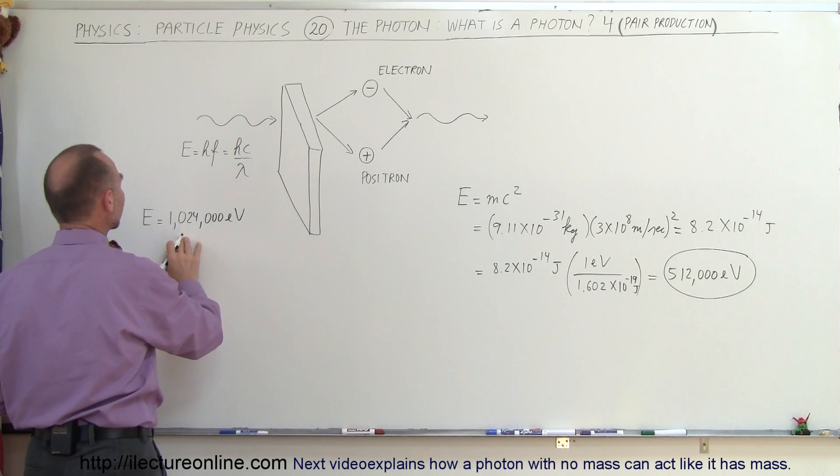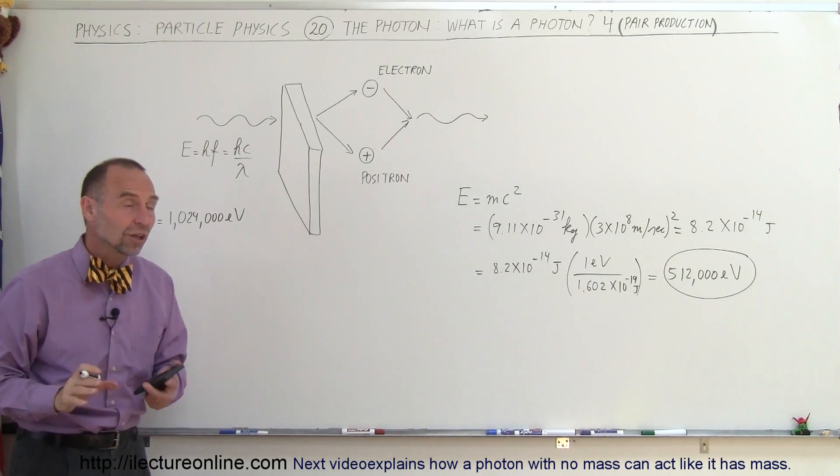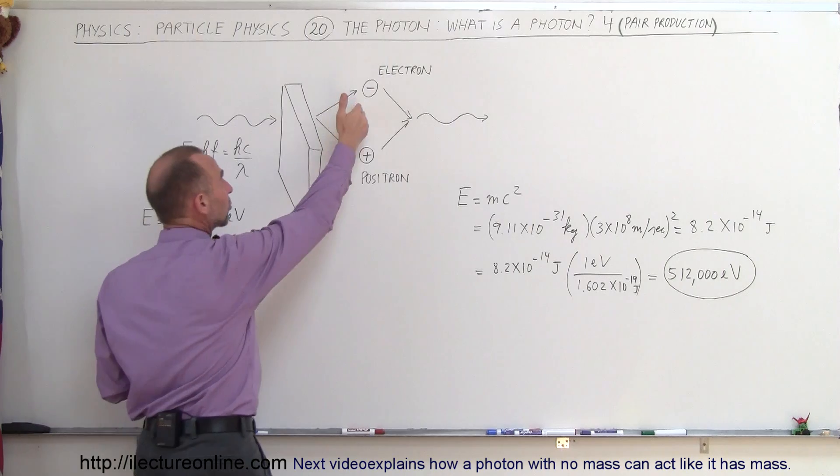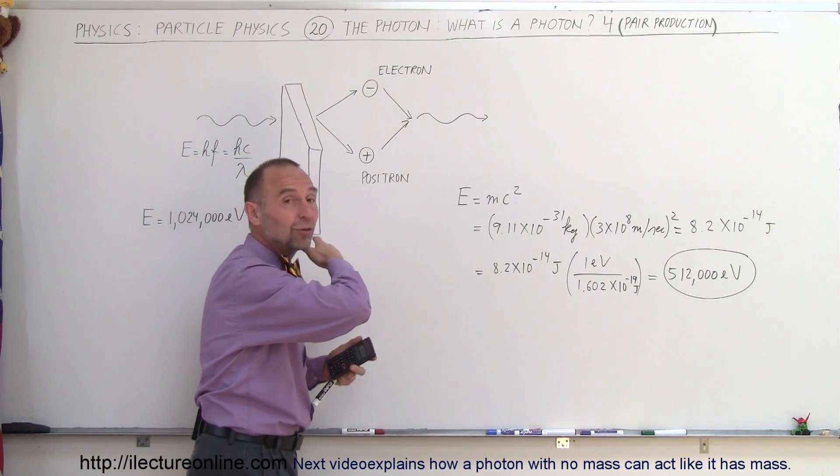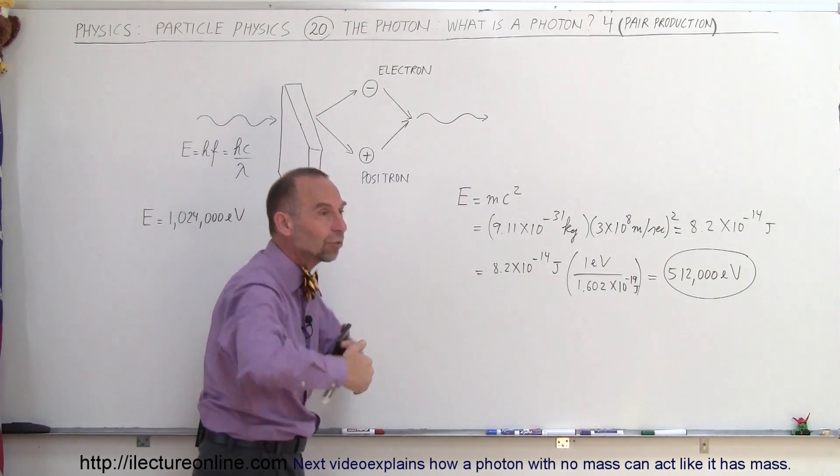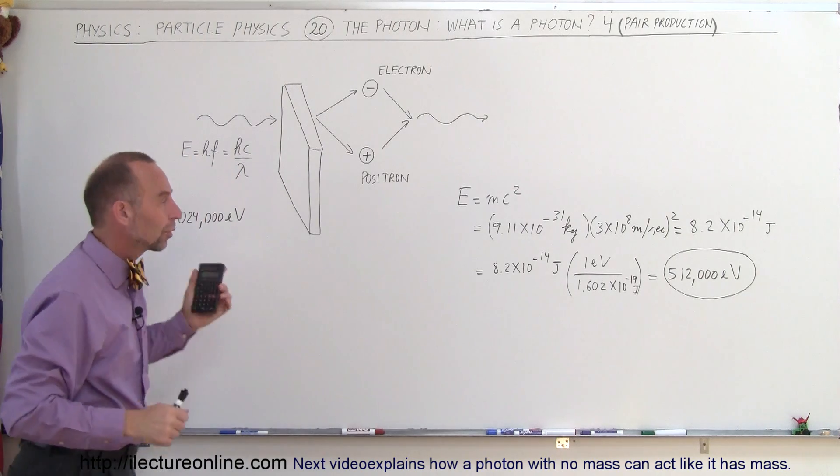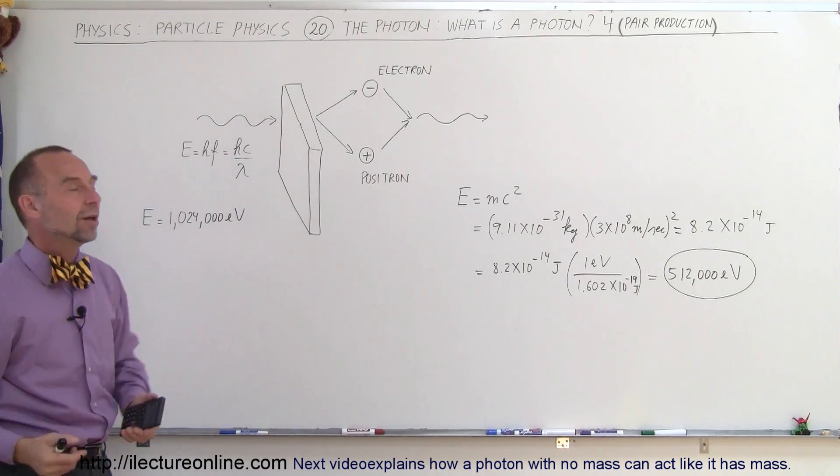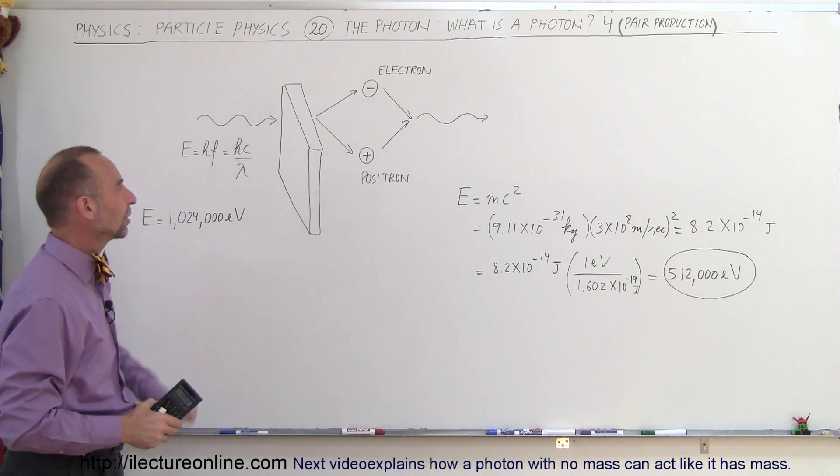Now what if a photon came along that had more than that amount of energy? Well, then the additional energy would then be imparted on the electron or positron in the form of kinetic energy, and it would fly off at some speed. The more kinetic energy it had, the faster it would be flying away from this particular event.